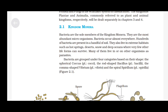Bacteria are grouped under four categories based on their shape: the spherical coccus (plural cocci), the rod-shaped bacillus (plural bacilli), the comma-shaped vibrium (plural vibrio), and the spiral spirillum (plural spirillia).